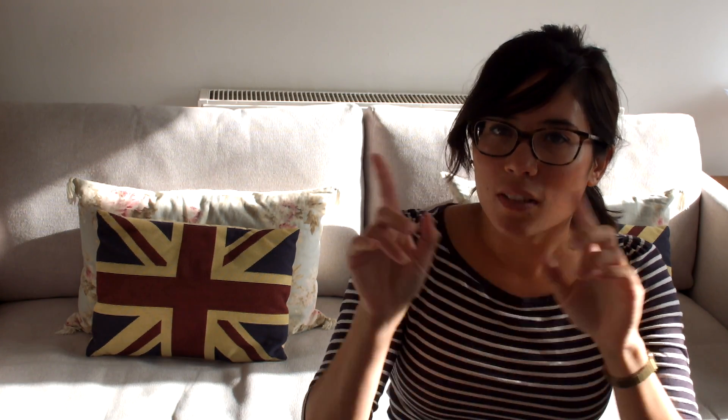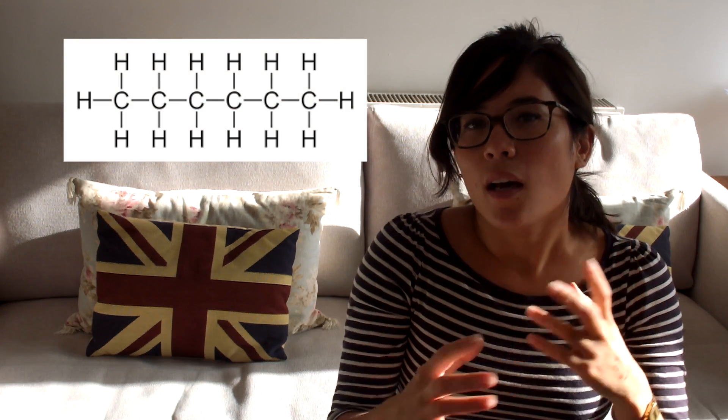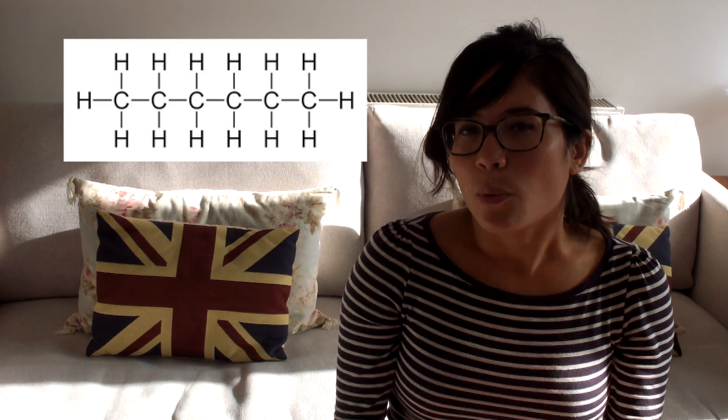If we draw it out, you'll be able to see the structure as a displayed formula and understand more clearly what's going on. A displayed formula is when you see all the bonds. A molecular formula or an empirical formula is when you literally write something like C₂H₆ or C₃H₈.